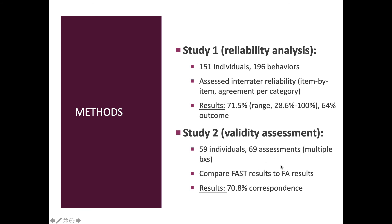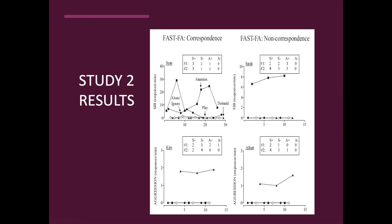Across all individuals in the 69 assessments, the correspondence between the FAST and the FA was about 70.8%. Generally we look for 80% or higher, so 70% isn't bad, but above 80 would be better. Here are some examples of the results. The FAST data are shown above each graph, with two raters and four reinforcement categories — social positive, social negative, automatic positive, and automatic negative — and the responses answered yes. In one example, the FAST indicated a social positive reinforcement function, and when looking at the functional analysis data, there was correspondence — the attention condition produced the most problem behavior.